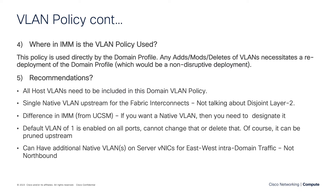As far as recommendations, it's going to be different for every customer, but some key principles: all your host VLANs and server VLANs need to be included in this domain VLAN policy. You can have a single native VLAN upstream for the fabric interconnects — not talking about a disjoint layer two scenario. If you want a native VLAN and want it to be the default of one, you have to designate that in the policy, whereas in UCS Manager, the default VLAN was already native by default.